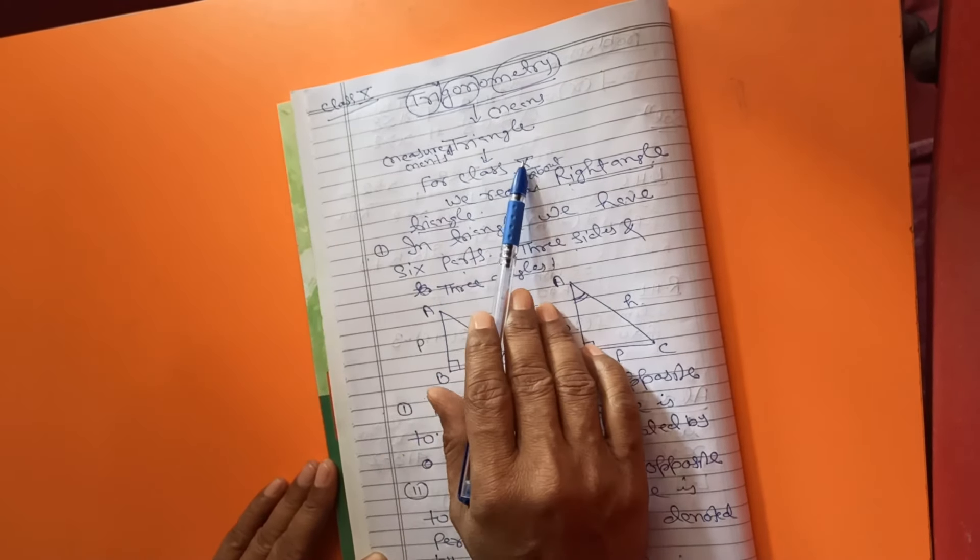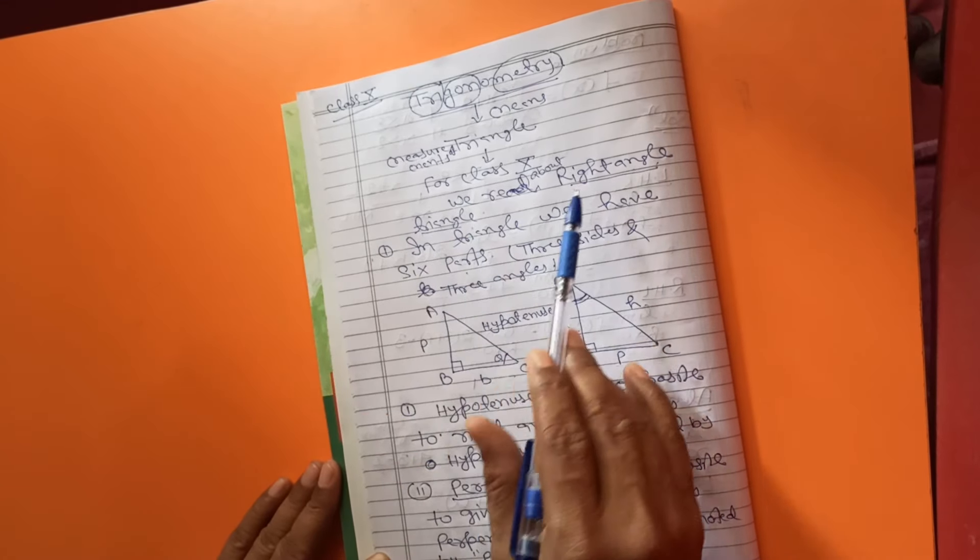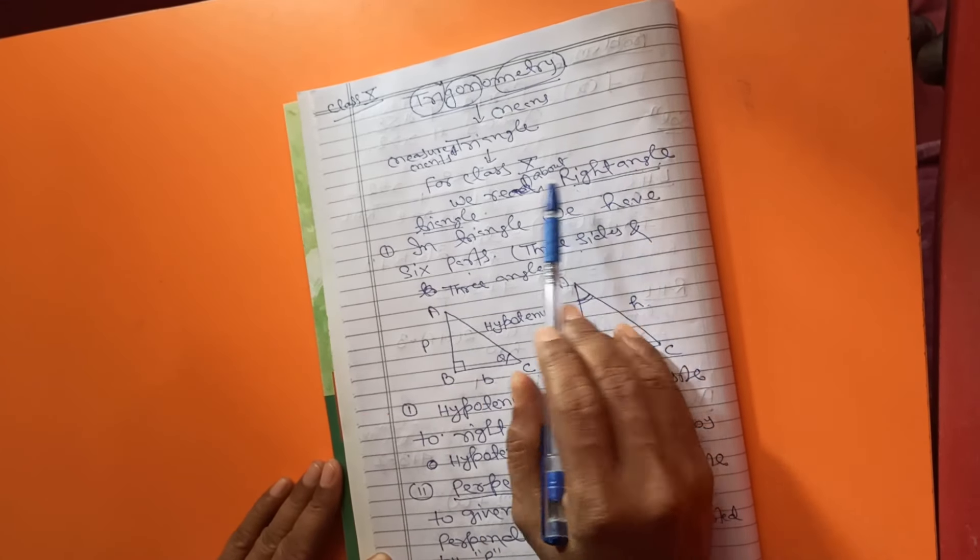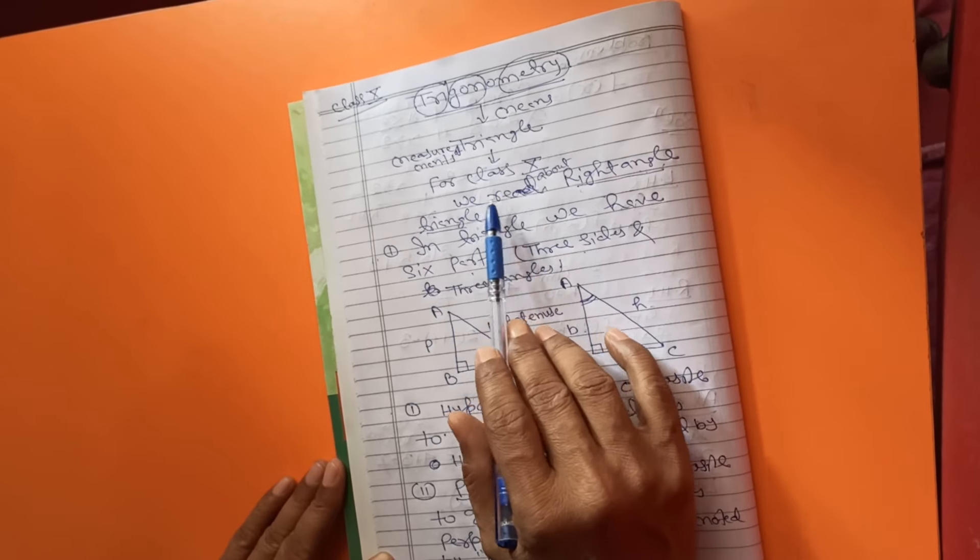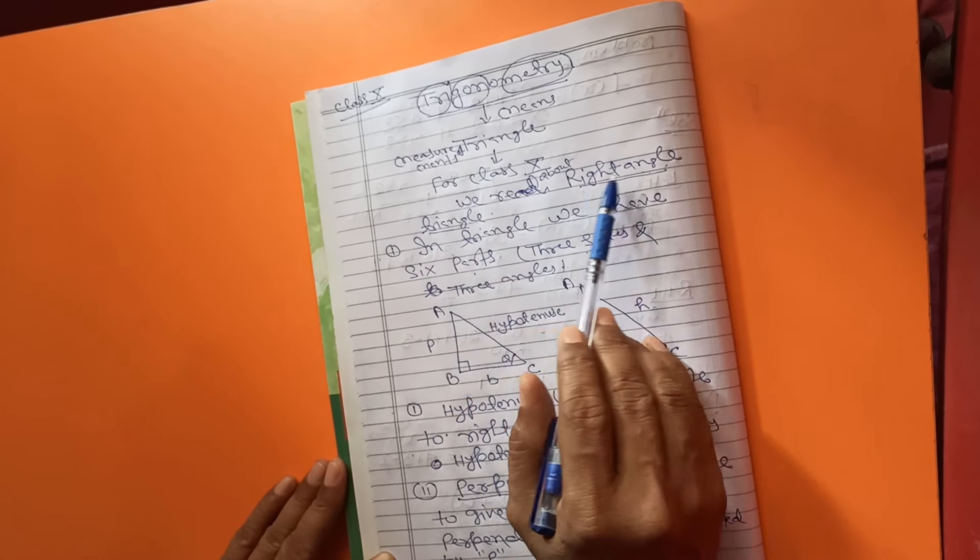For Class 10, you measure the triangle only right angle triangle. For Class 10, you read about right angle triangle.